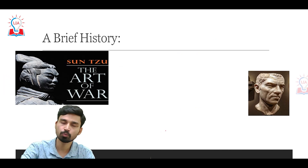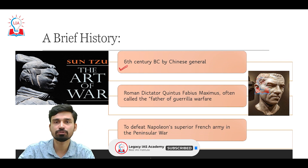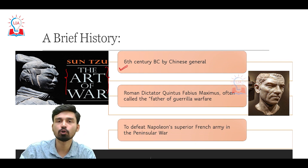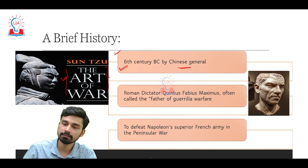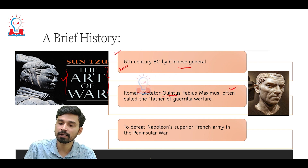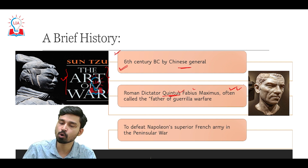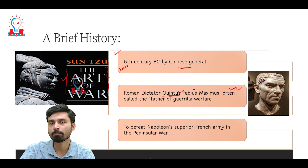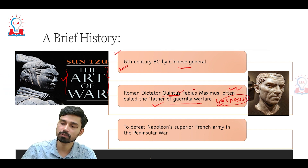Tracing the history of this type of warfare, we go back to the 6th century BC when the most famous book on military practice, the Art of War, was written by Chinese general Sun Tzu. It is in the Art of War where guerrilla warfare tactics are first mentioned. Later, in the 3rd century BC, Roman dictator and military general Quintus Fabius Maximus employed guerrilla warfare in various wars, and is considered the father of guerrilla warfare. His tactics are sometimes referred to as Fabianism.